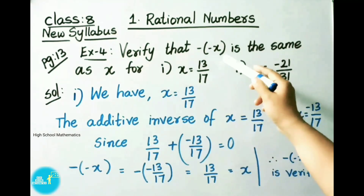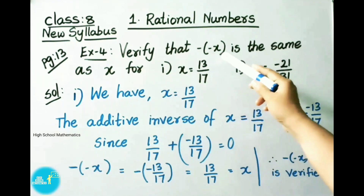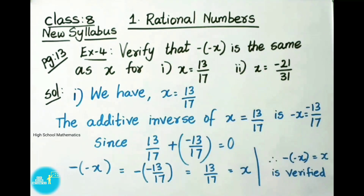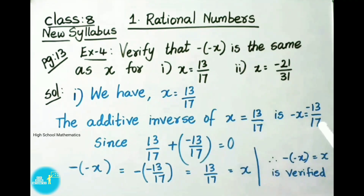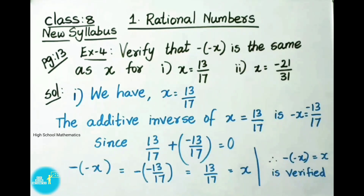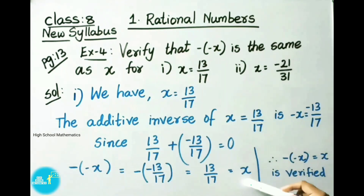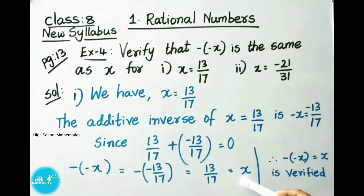Therefore, in our question they ask us to verify minus of minus x is equal to x. So we have written minus of minus x. That equals to minus of minus x means minus 13 by 17. That equals to minus of minus means plus, so 13 by 17. This 13 by 17 means x. Therefore, minus of minus x is equal to x. So it is verified.